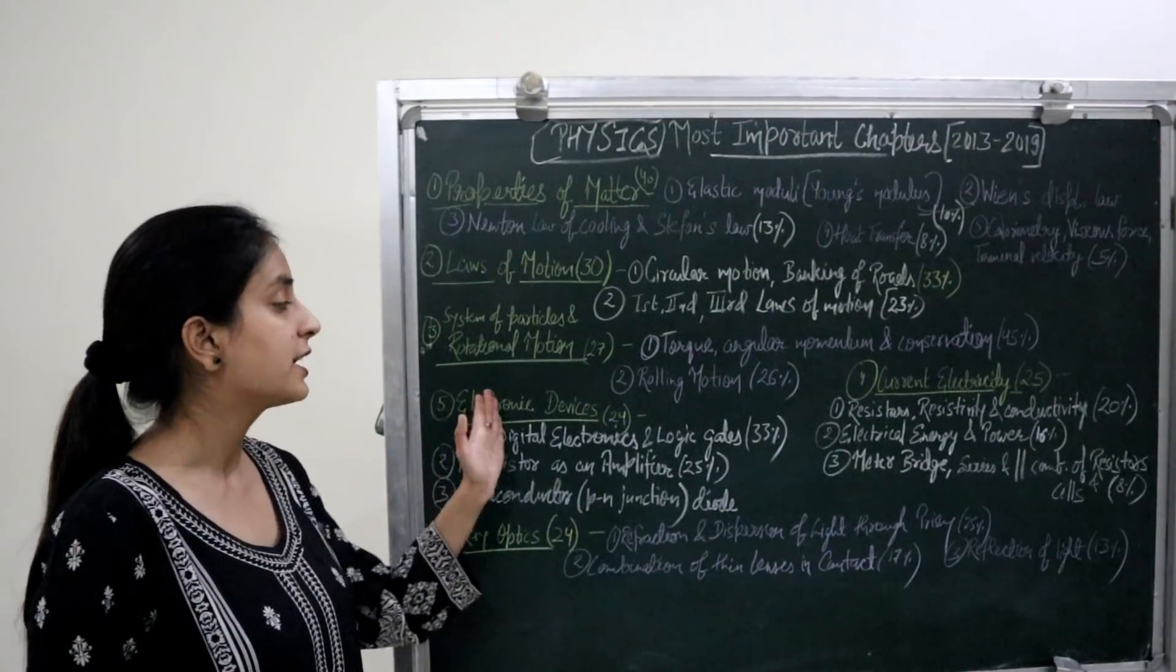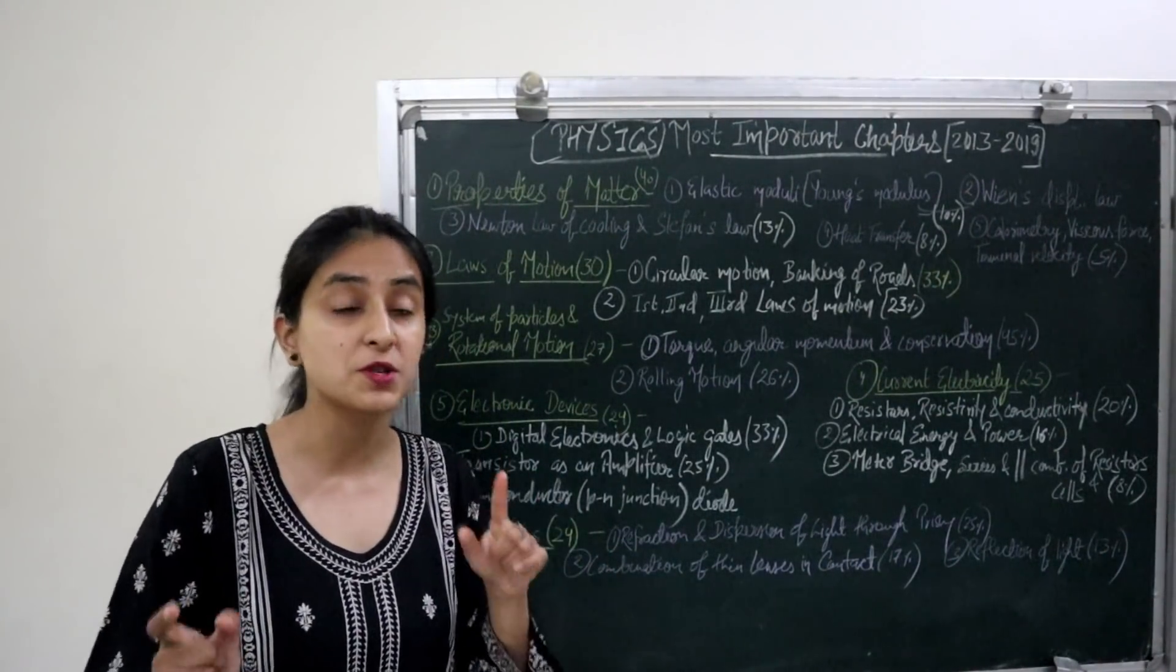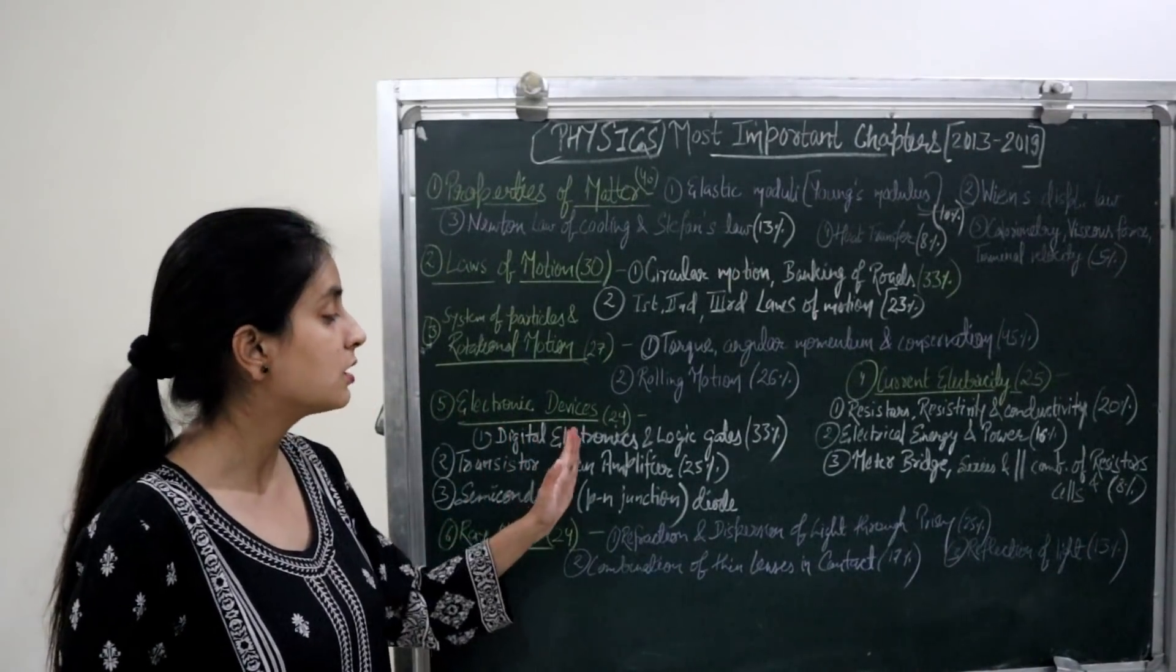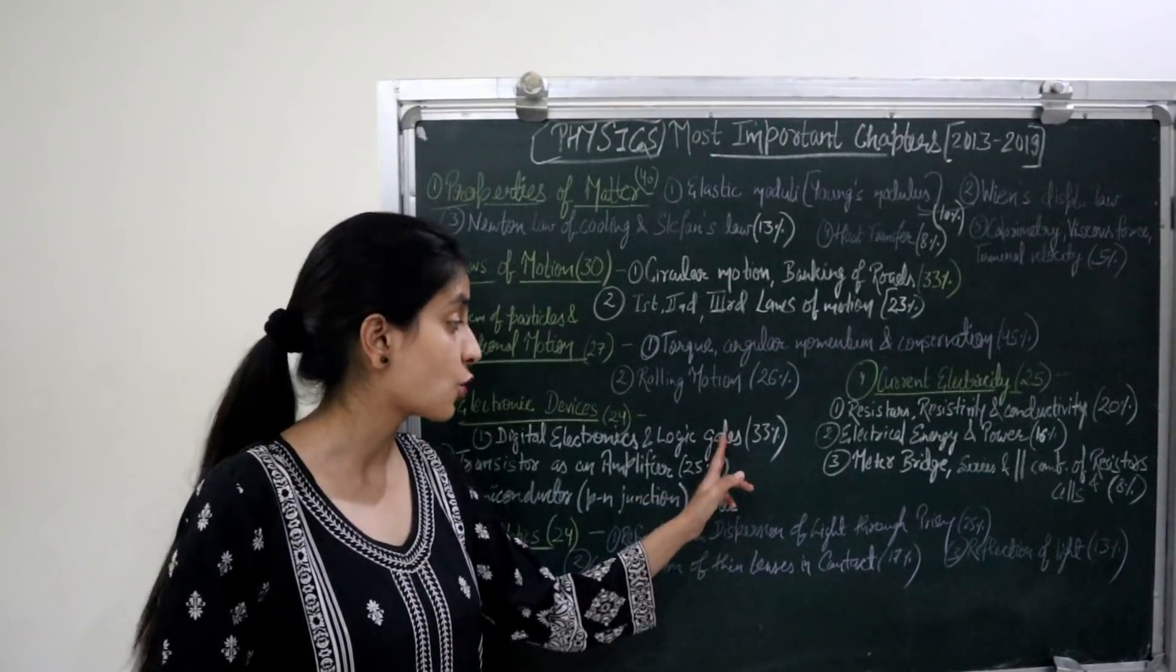Fifth most important chapter is Electronic Devices. 24 questions in the past 7 years in this chapter. Most important topics are Digital Electronics and Logic Gates. 33% questions in this topic.